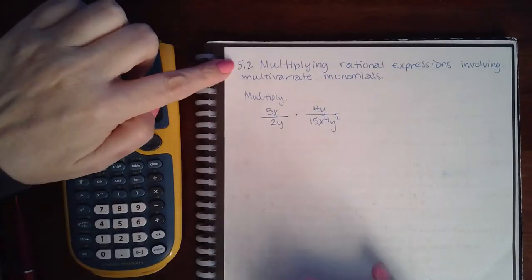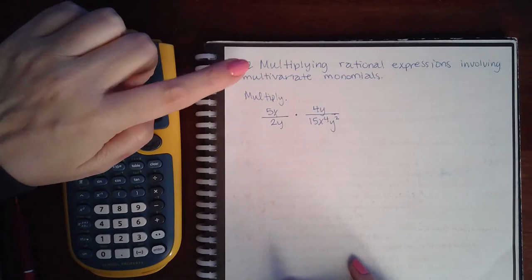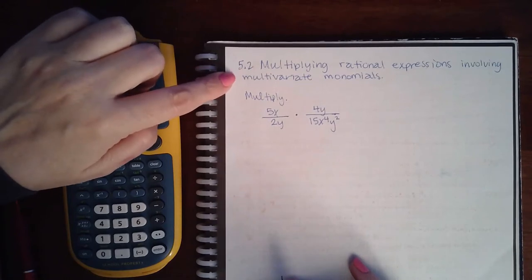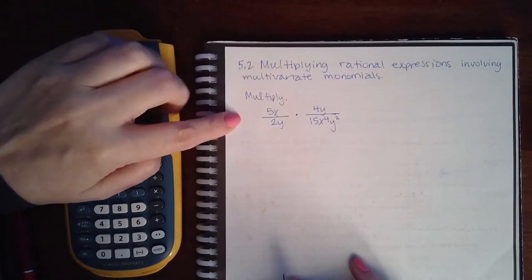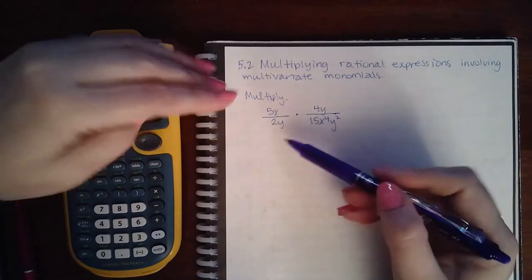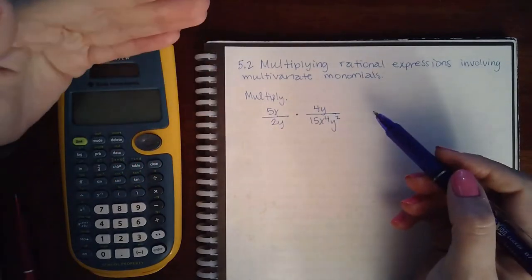Here we have 5.2 multiplying rational expressions involving multivariate monomials. So you can reduce any top with any bottom, but once you've reduced it,